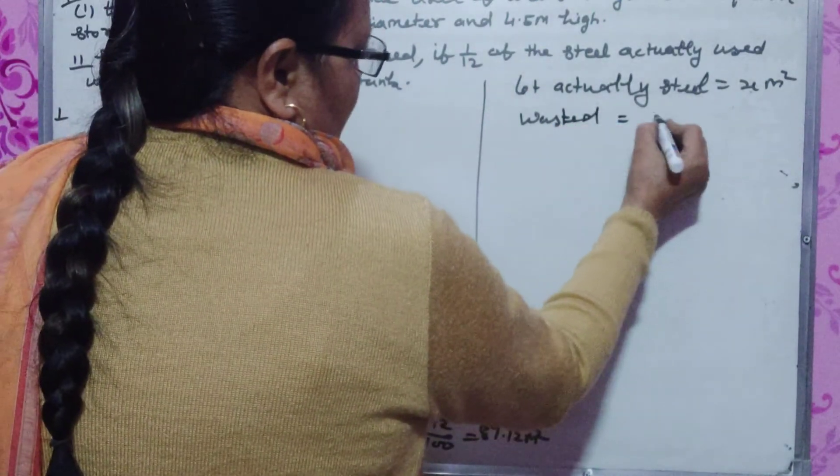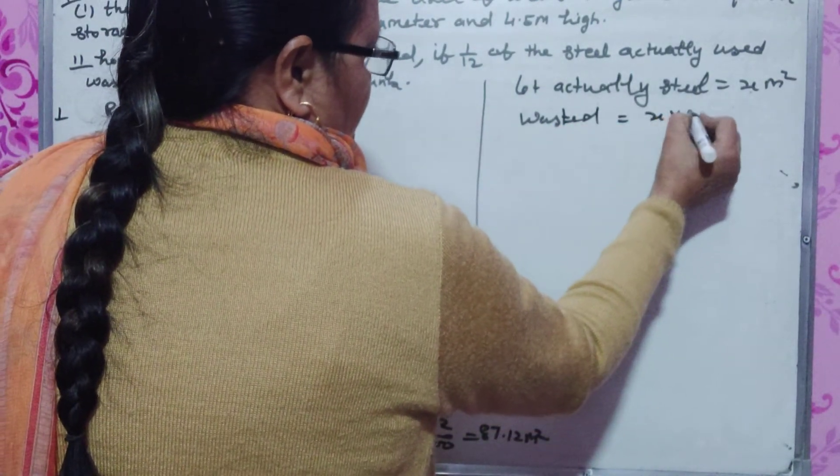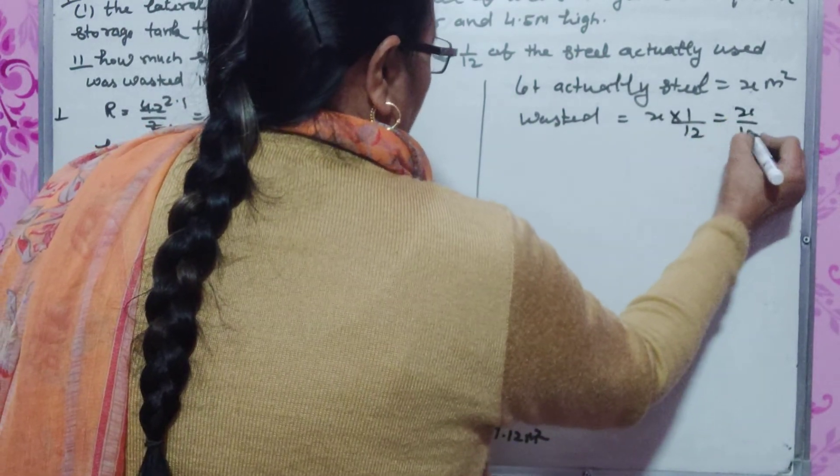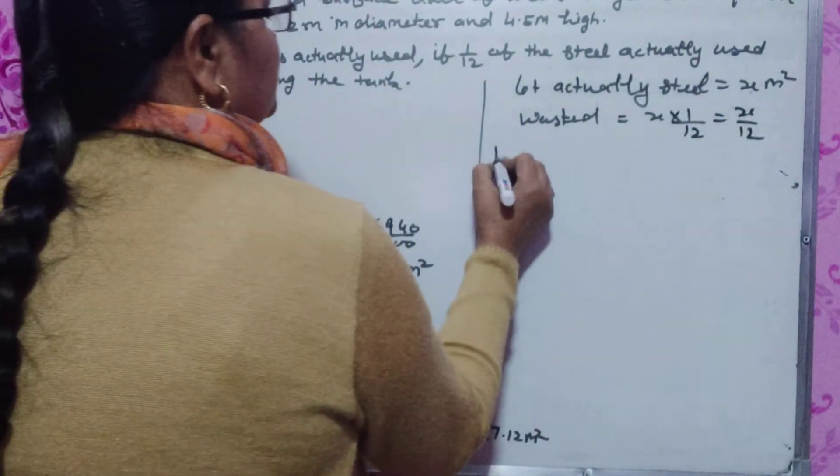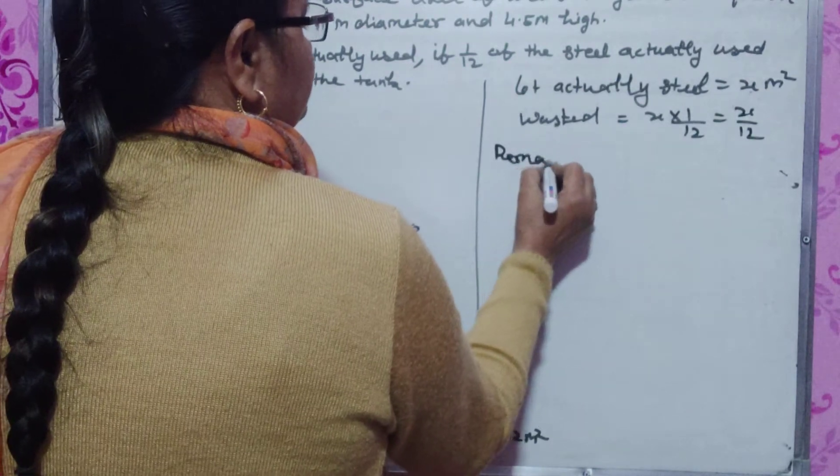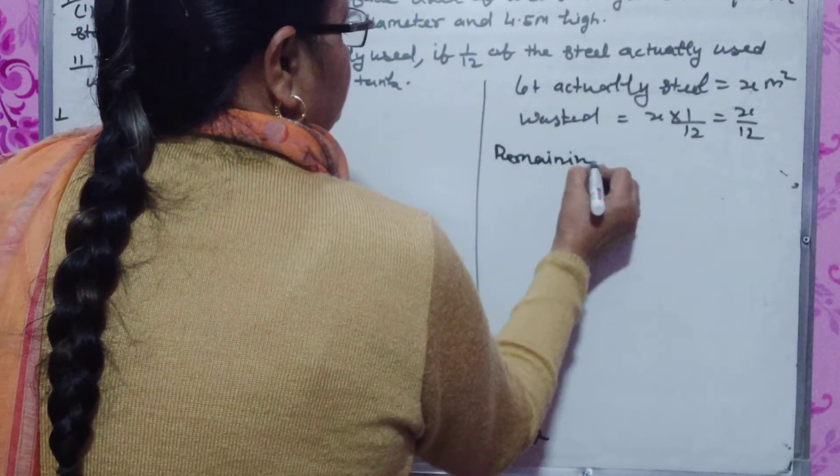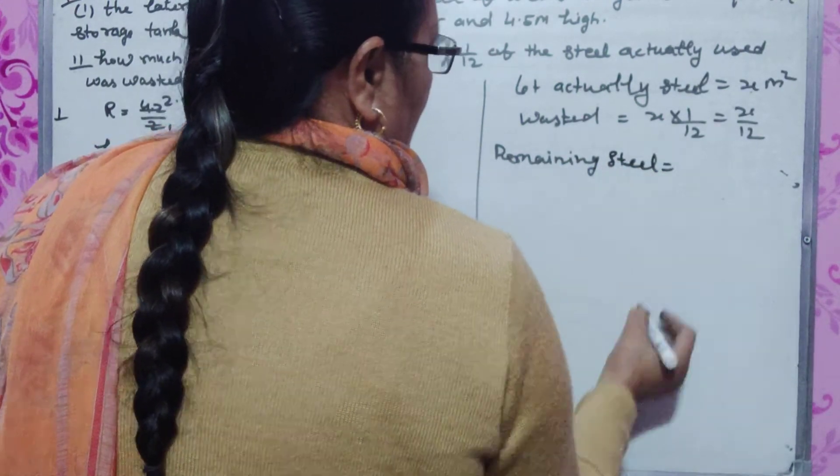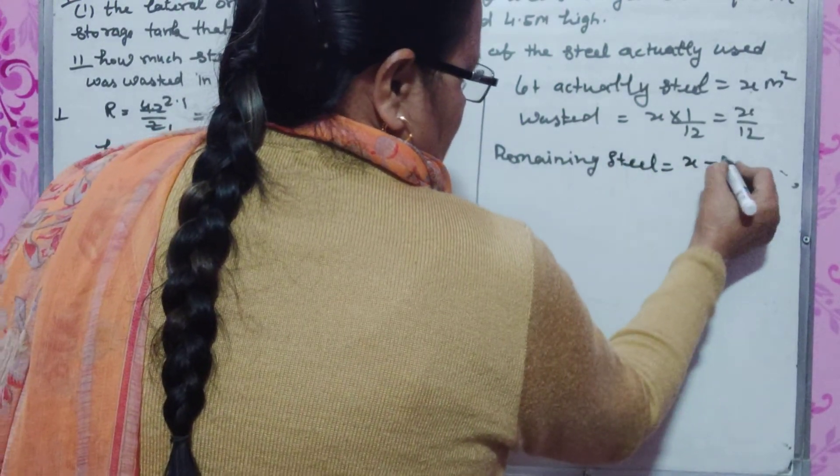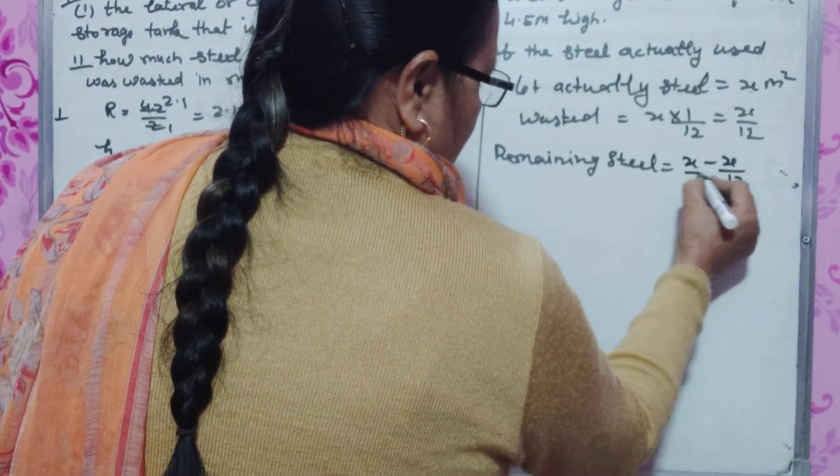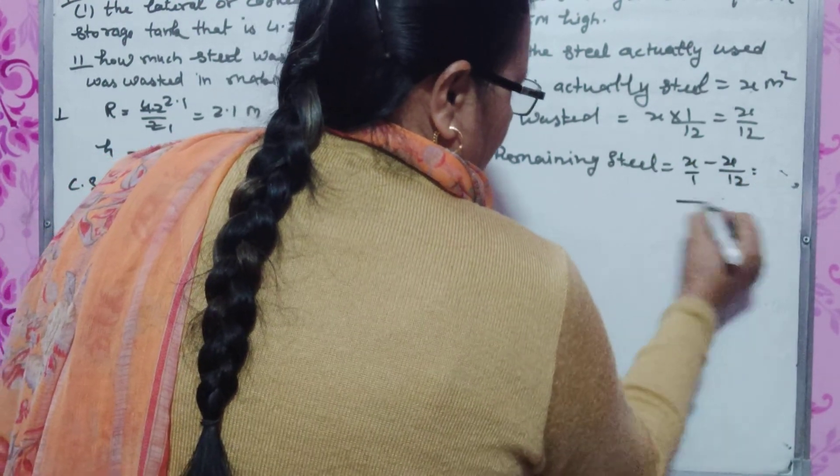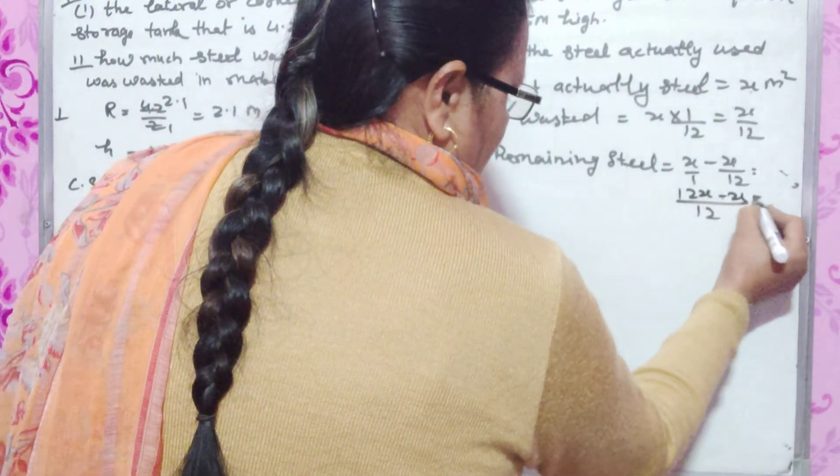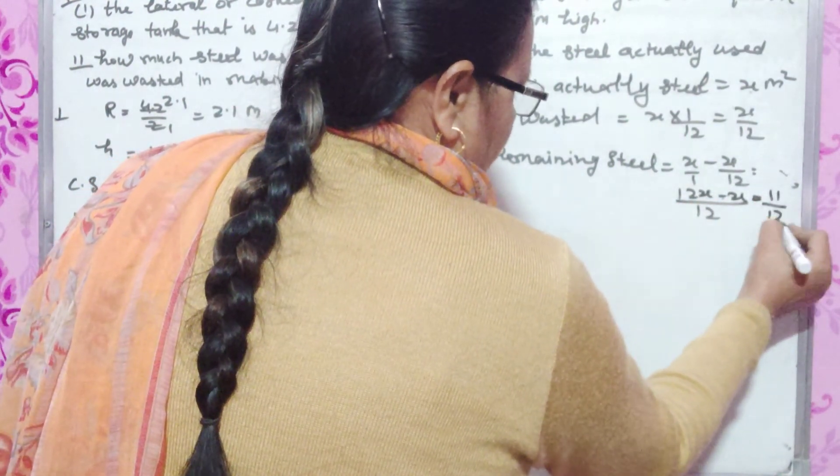Let actual steel be x meter square. Wasted is x times 1 by 12. Remaining steel is x minus x by 12, which equals 12x minus x, which is 11x by 12.